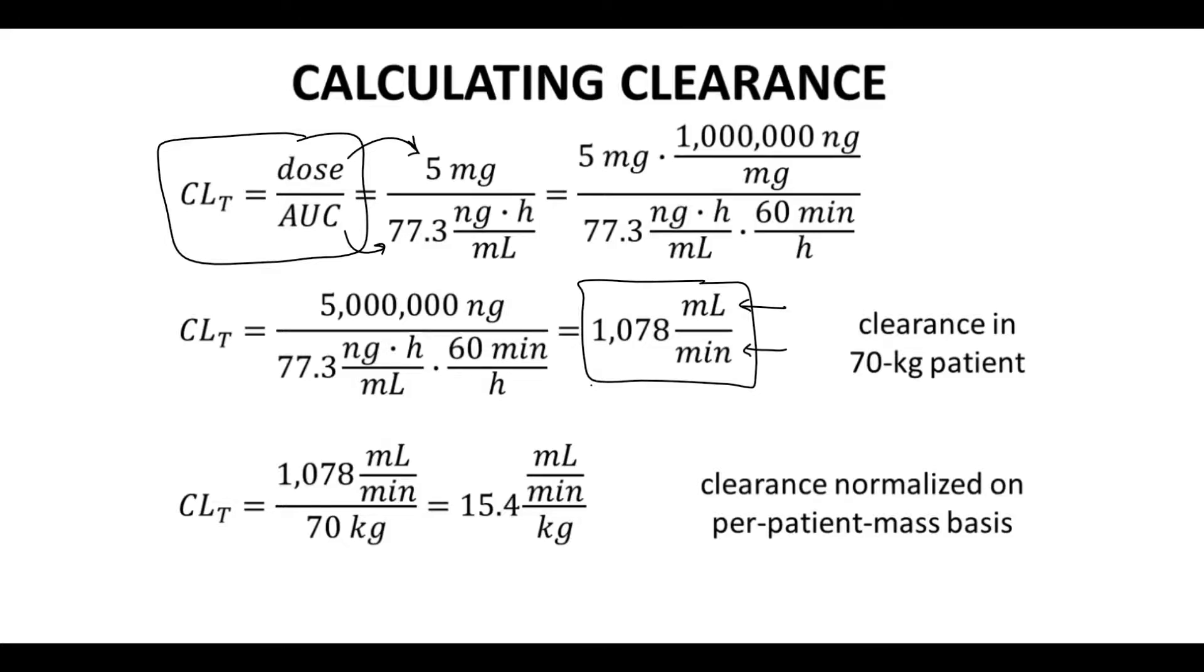Now our initial calculation for clearance is right in the middle of the screen. We need to worry about units. So clearance is milliliters per minute, and yet here in our formula, we have nanograms and hours. So there's some work in this slide where we need to convert our units so things will properly cancel and give the final units that we want. And that gets us to our number in the middle of the slide. Our total clearance is 1078 milliliters per minute.